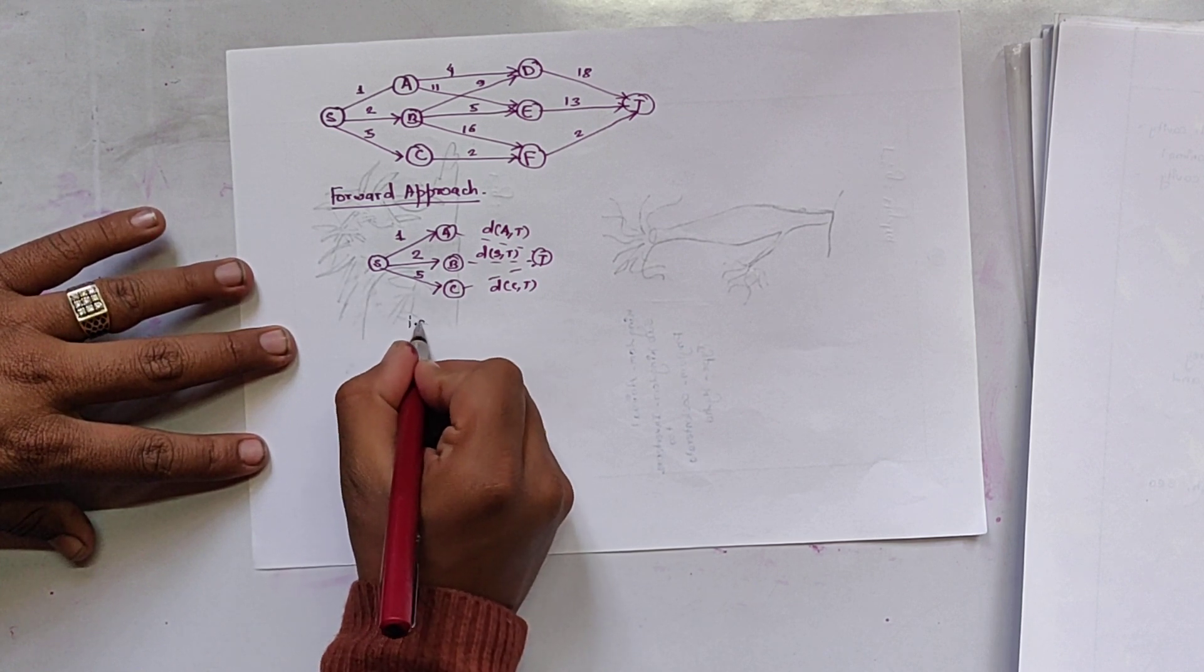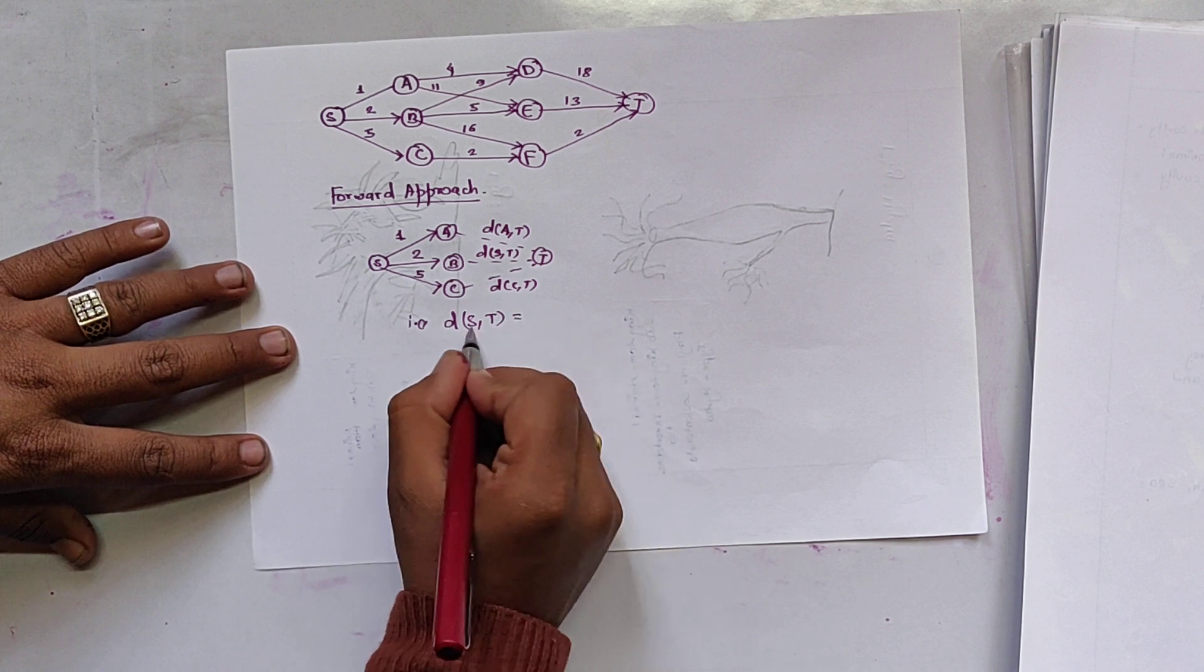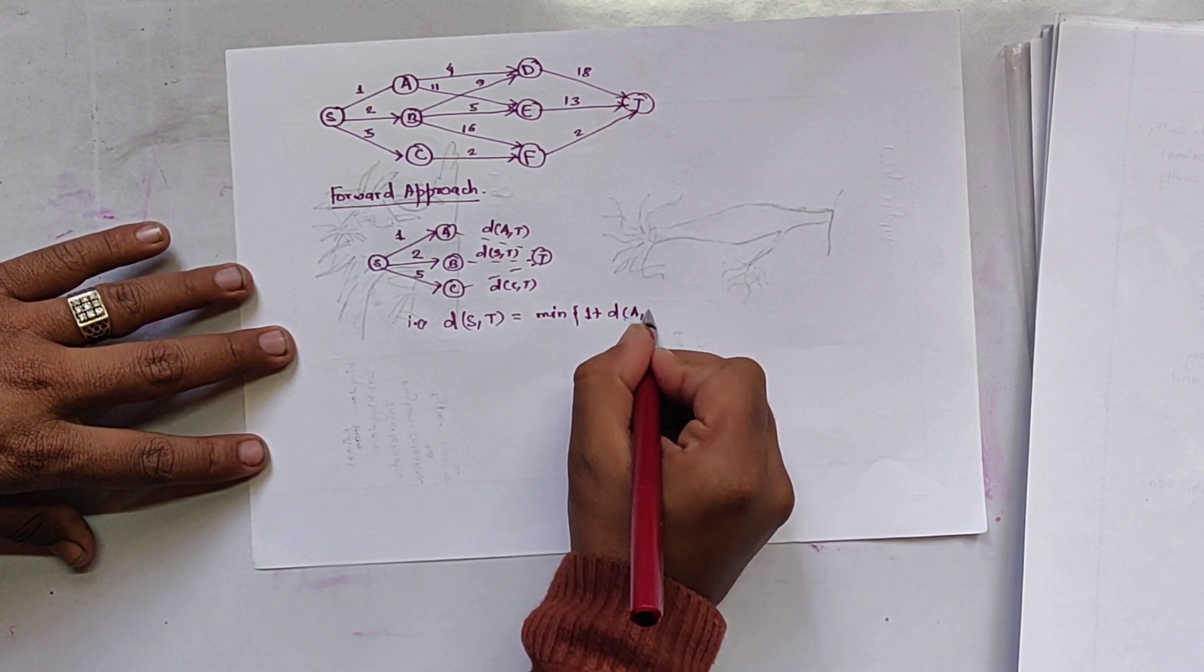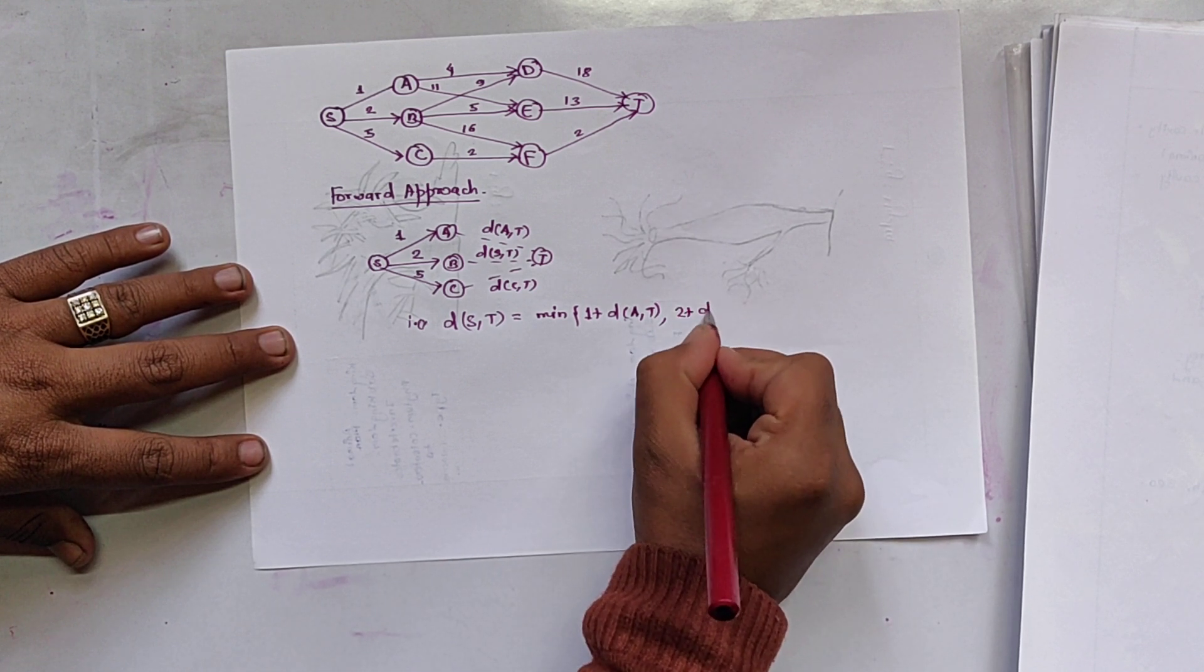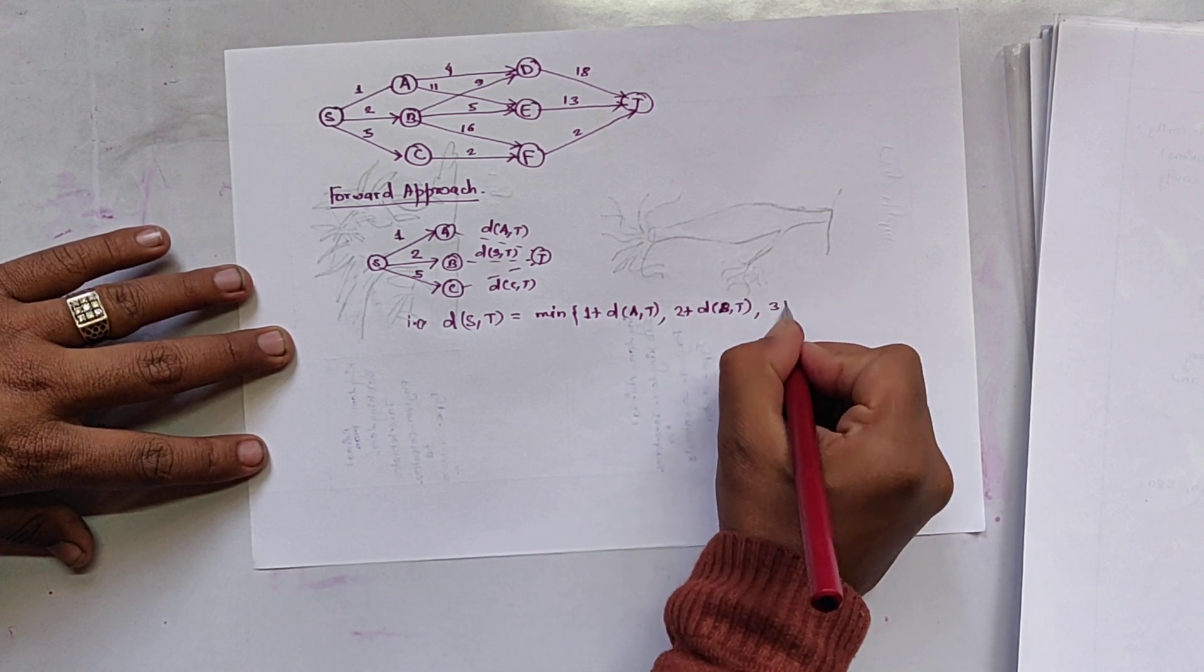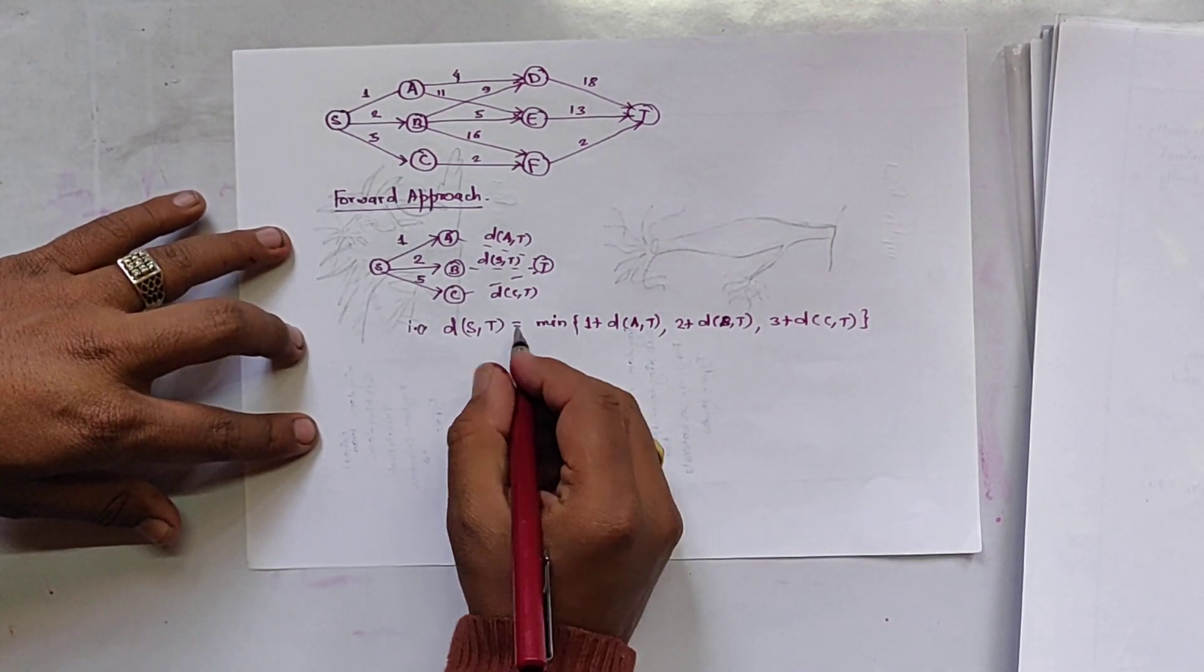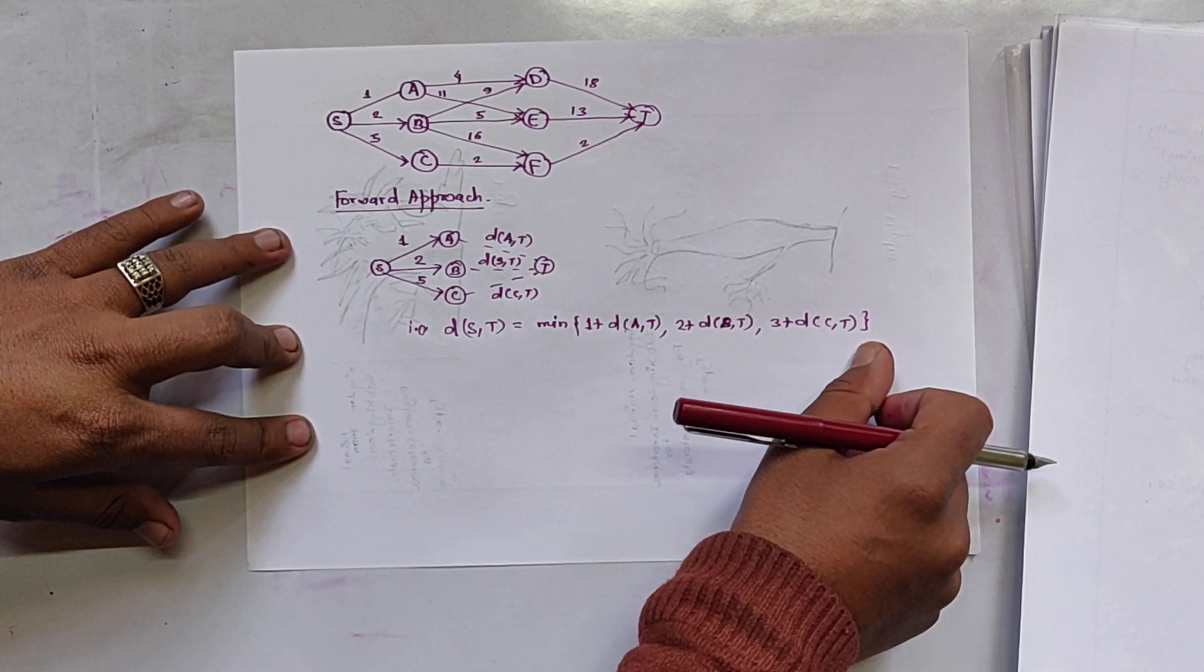That is DST. That means length from source to terminal node is minimum value of 1 plus DAT, 2 plus DBT, 5 plus DCT. There are 3 paths. And we don't know the value of DAT, DBT and DCT. So we have to expand A node.